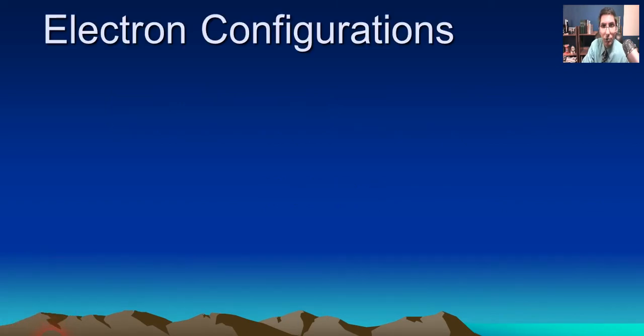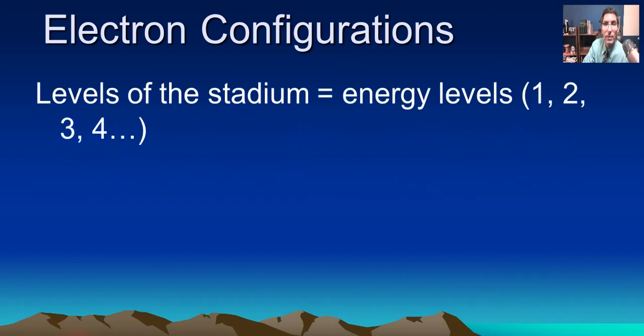Now, when we say electron configurations, you might remember that there was this stadium model that we looked at in the earlier videos in this module, where we had this nucleus in the middle, and then we have these levels of the stadium, and then inside those levels we have the little sections of each level, and then some of these sections had other smaller boxes in there too, in which we were able to put arrows.